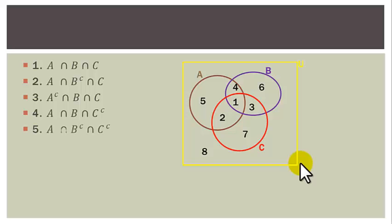Region 5 is A intersection B-complement intersection C-complement — part of A but outside B and outside C. Region 6 is A-complement intersection B intersection C-complement — part of B, outside A and outside C.